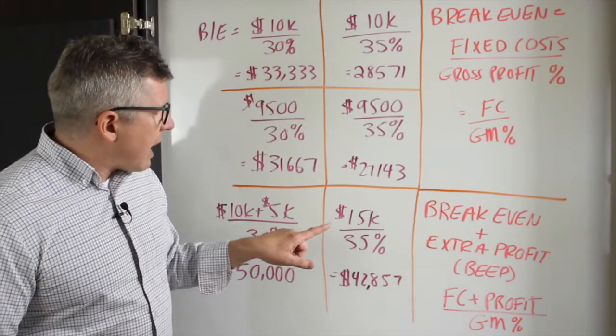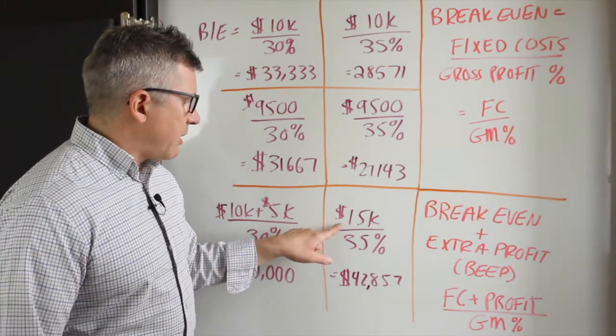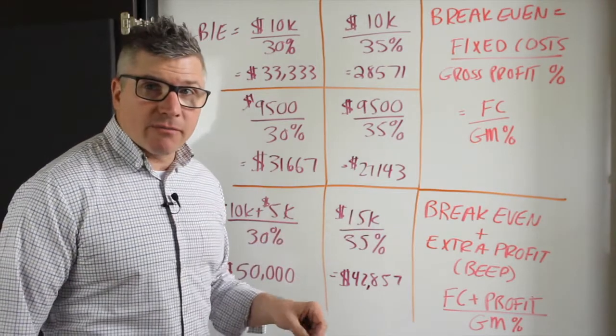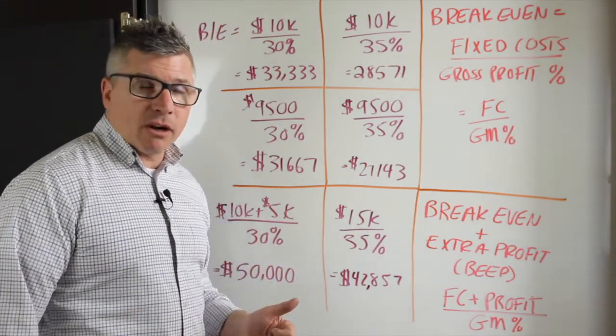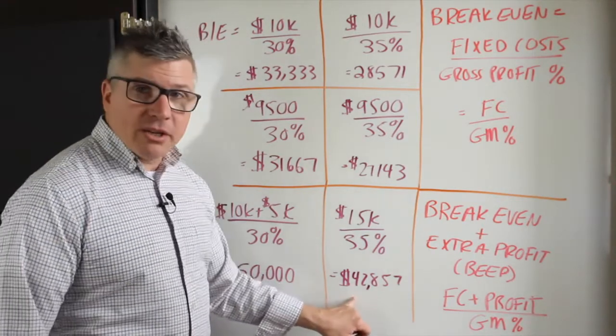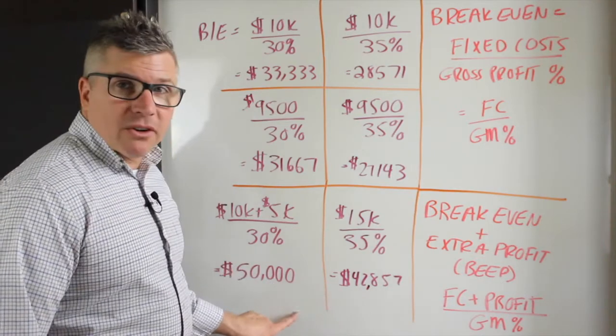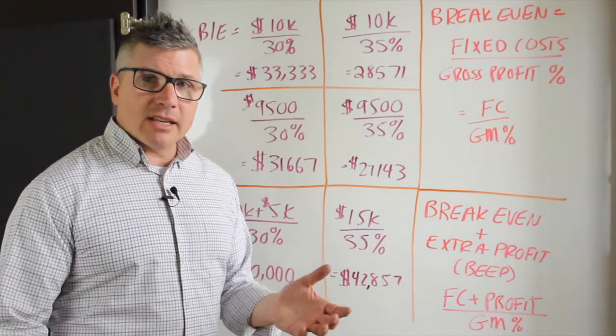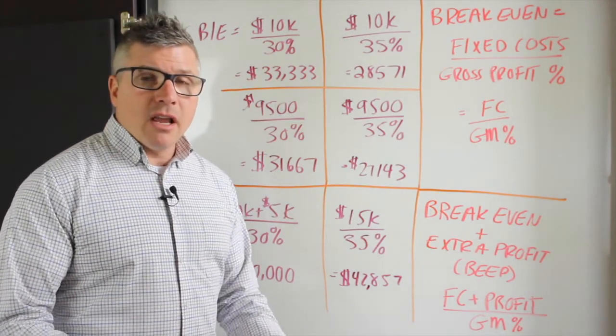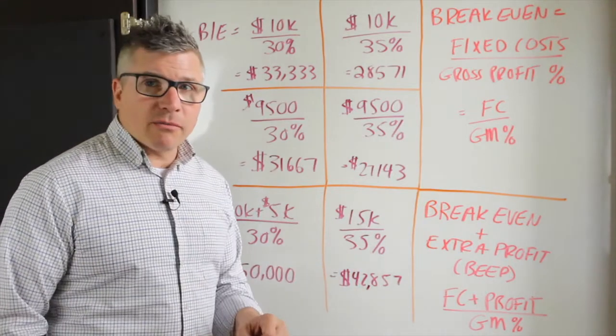So what happens if we can increase our gross profit margin? We have our $15,000 here, our $10,000 fixed cost plus $5,000 of profit, and we have 35% gross profit margin. We've got a healthier profit margin. We only have to sell $42,857 and change. So it's just about a $7,000 difference. You can see how we can get these wild swings in what our sales need to be in order to break even and to earn profit depending on our fixed costs and depending on our gross profit margin.